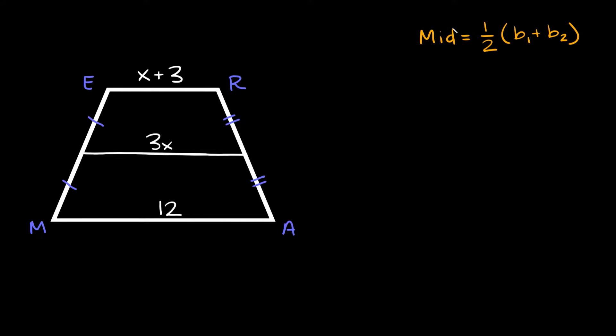So here we could say that the mid-segment, which is 3x, so if we're trying to solve for x, we could say 3x is equal to 1 half and then the bases added up. So this base, the top one, x plus 3, plus the second base, which is 12.